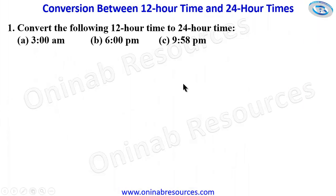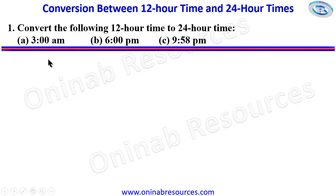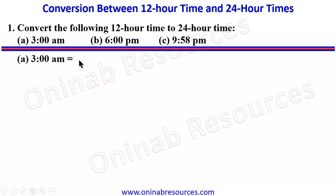We go ahead to solve some problems. Problem 1: convert the following 12-hour time to 24-hour time. Starting with A: 3 a.m. Any time it is a.m. and the hour is one digit, we make it two digits by adding a zero before the hour. So in 24-hour time, we write 0300. Similarly, 5 a.m. becomes 0500 in 24-hour time.